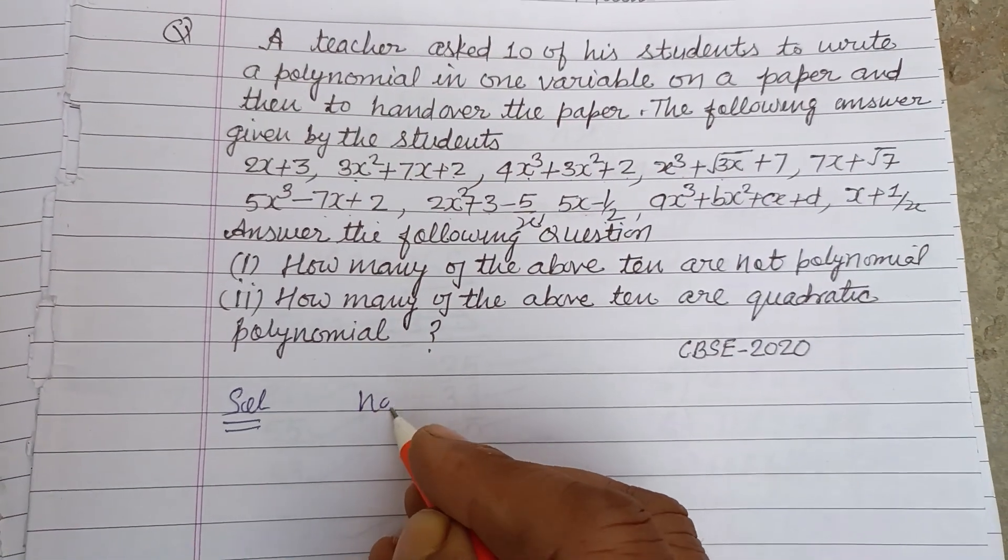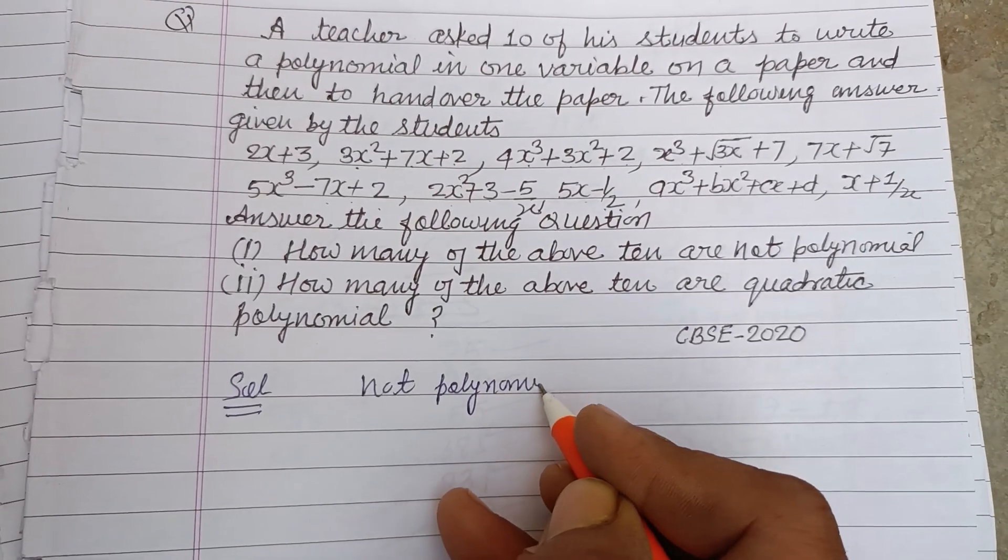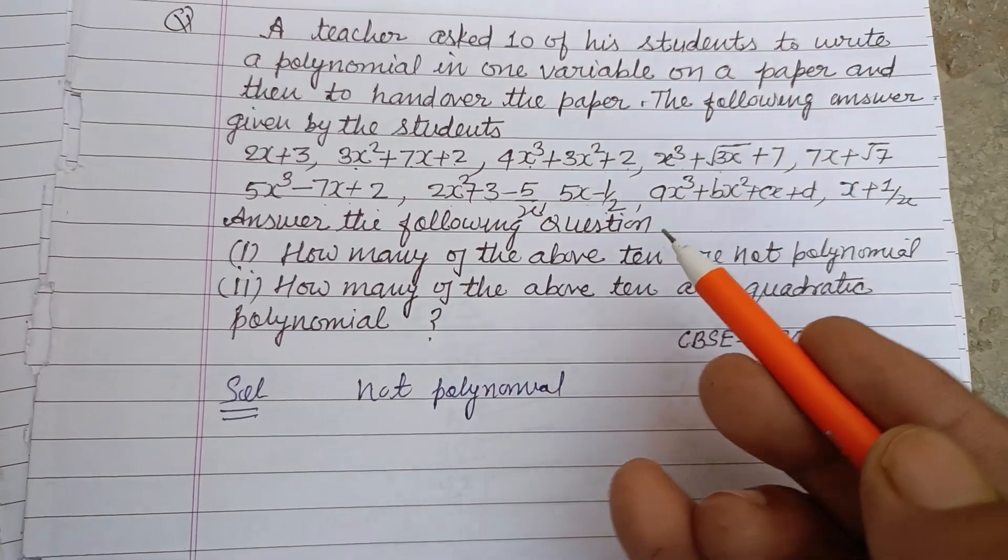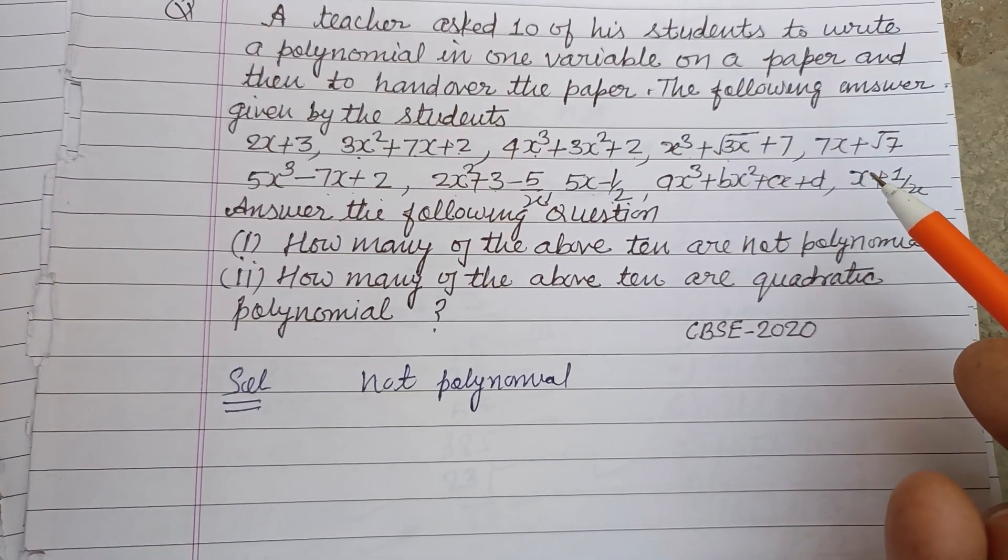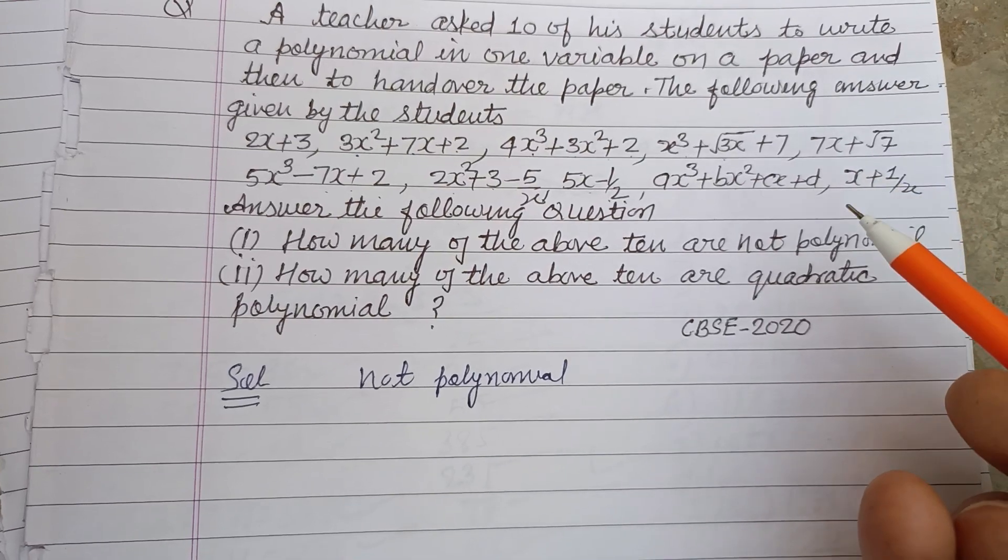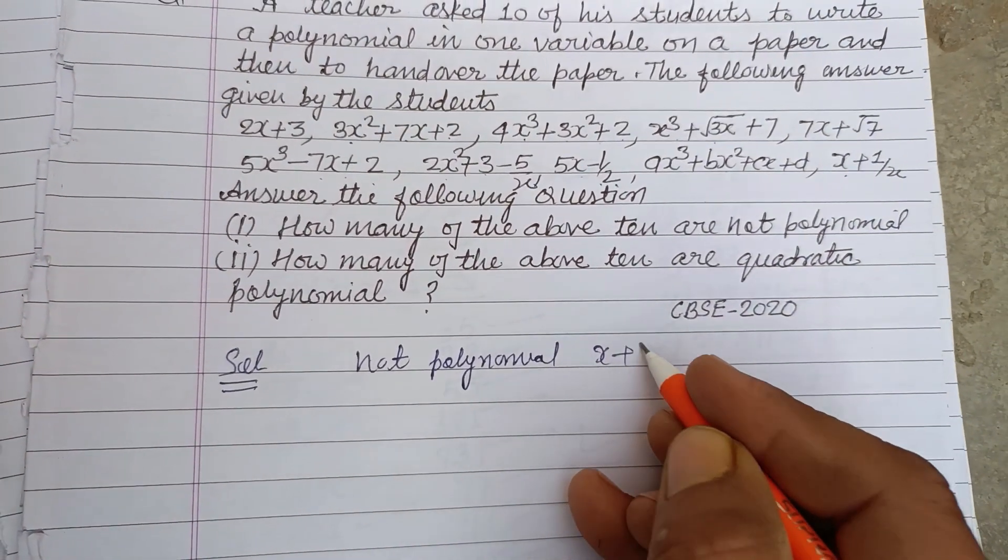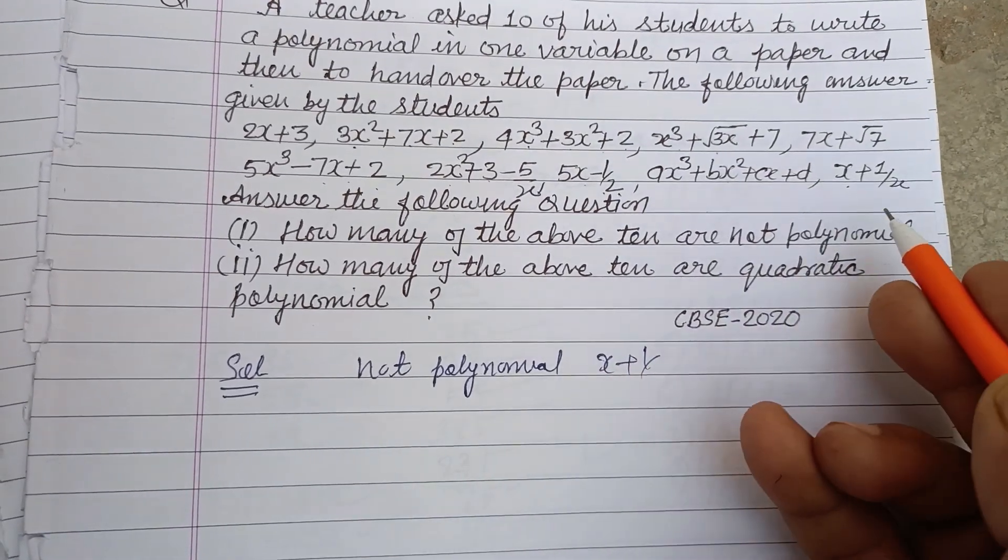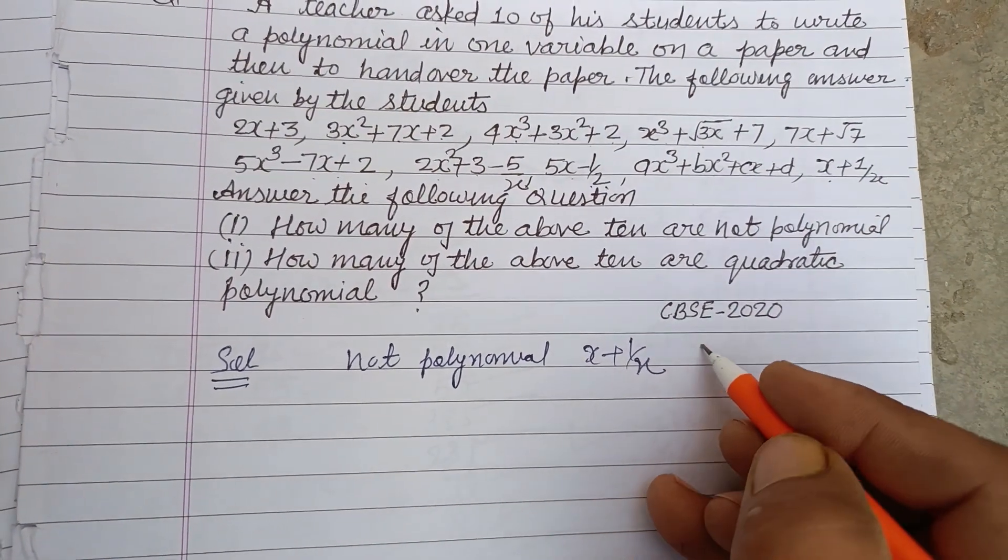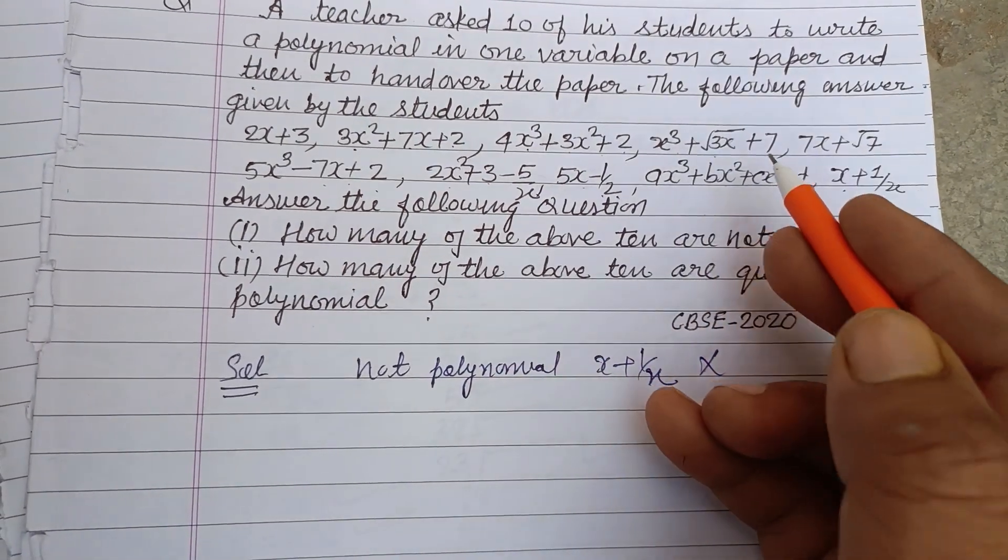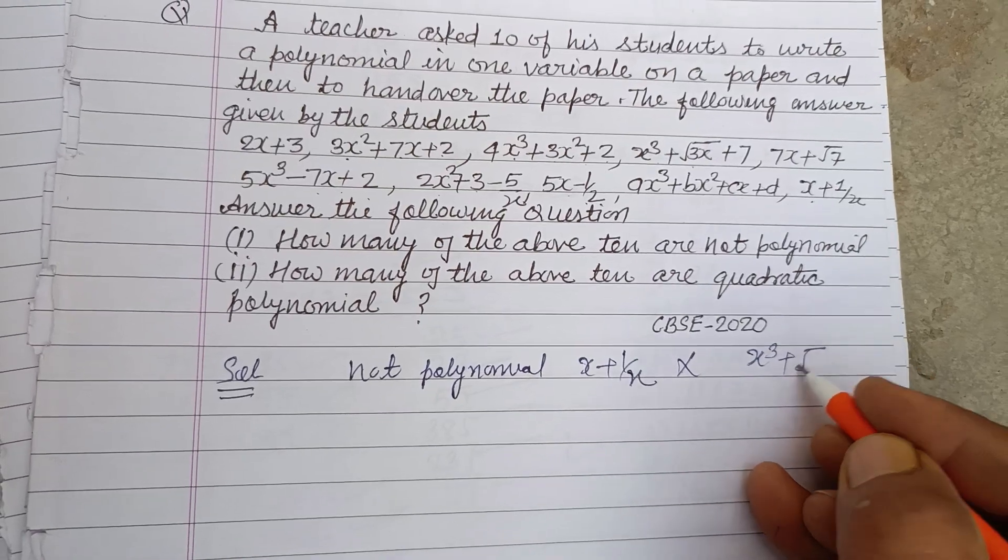When a variable has rational power, it is not a polynomial. So here, x + 1/x - when a polynomial has negative power, then it is not a polynomial. This has rational power, so it is not a polynomial.